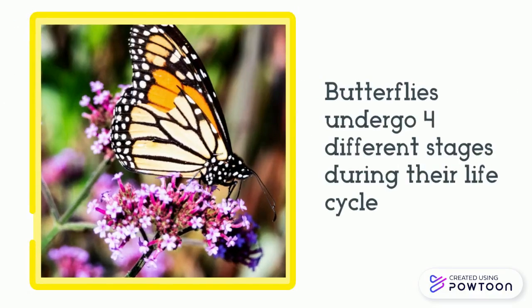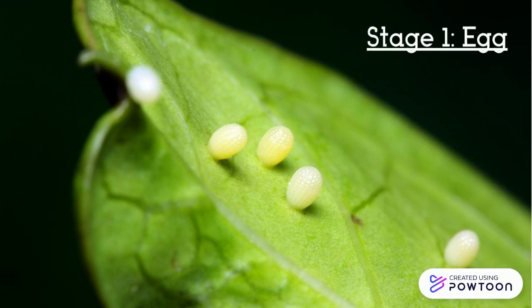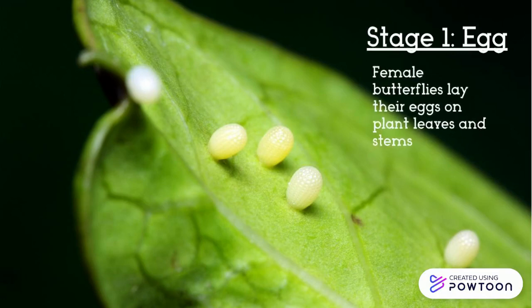Butterflies undergo four different stages during their life cycle. Butterflies first begin with stage one: egg. Female butterflies lay their eggs on plant leaves and stems. The arrows show the eggs on a leaf.